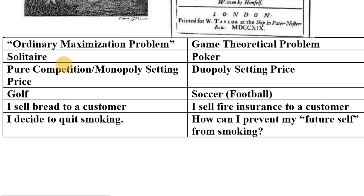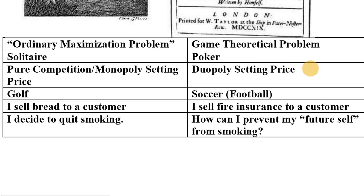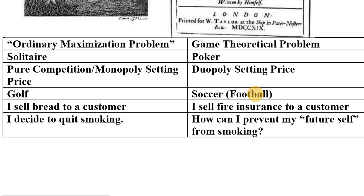Ordinary maximization: in pure competition, there are so many other firms that you take the market price as given. In a monopoly setting, you choose your price and quantity to maximize profit — end of story. But in a duopoly, pricing becomes a game theory problem. If I'm one of two duopolists and I raise my price, I have to anticipate how the other duopolist is going to react to that change.